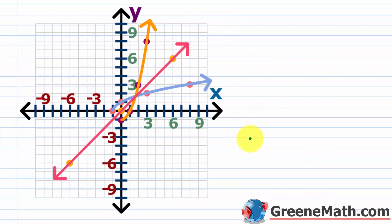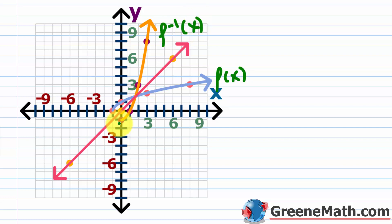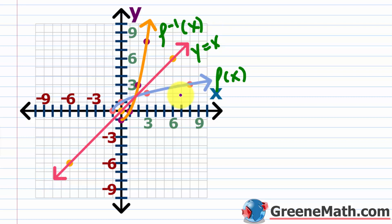Looking at this graphically — f of x is plotted in blue and f inverse of x is in orange. You can see we've cut off the left side of the parabola completely; we only considered x values greater than or equal to zero. And you'll notice that if you graph the line y equals x, you can take any point on f of x and reflect it across that line to get the corresponding point on f inverse. For example, the point 8 comma 3 on f of x reflects to 3 comma 8 on f inverse.